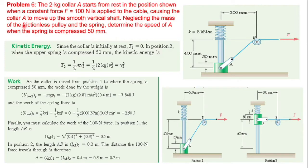The force causes collar A to move up the vertical shaft. Neglecting the mass, with a frictionless pulley, we need to determine the speed of collar A when the spring is compressed 50 mm.